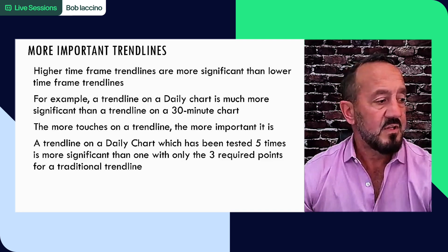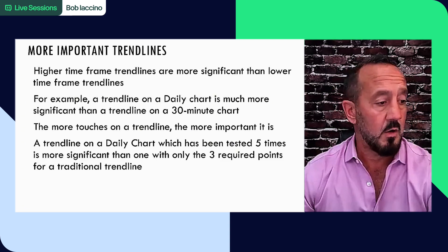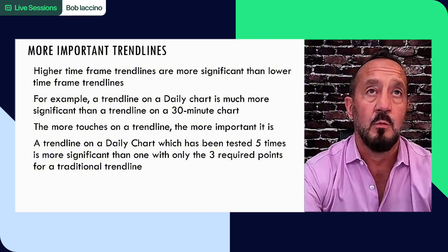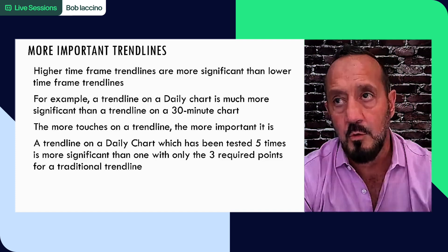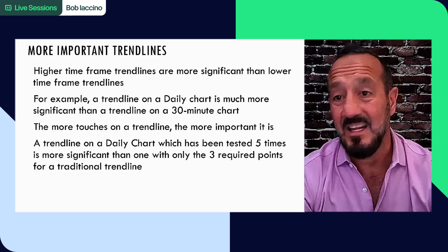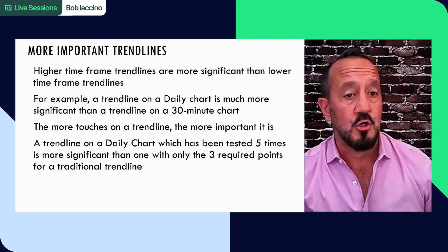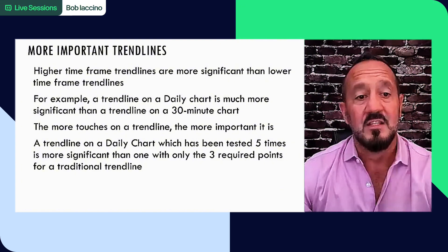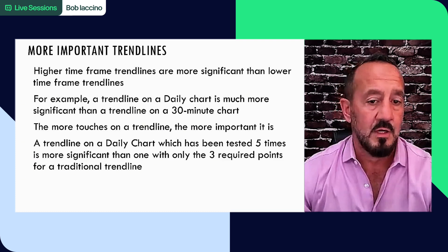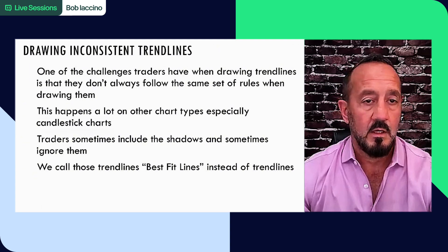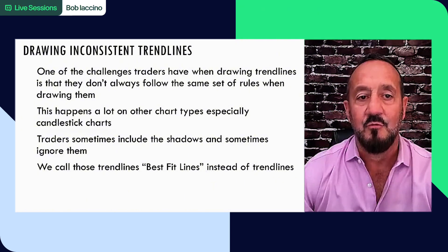Why do I tell you all this? Sometimes you'll be watching a financial news network and you'll see somebody draw a trend line and go, he's not using traditional trend lines because that trend line doesn't have a third point. Or he has multiple closes above a downward slope trend line, and then it failed and he didn't redraw it. The trend line on a daily chart which has been tested five times is more significant than one with only the three required points of a traditional trend line.